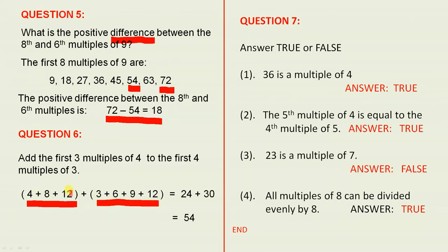Those numbers add up to 24. Those numbers add up to 30. 24 + 30 = 54. So that's the answer. Now here we have some true or false questions.